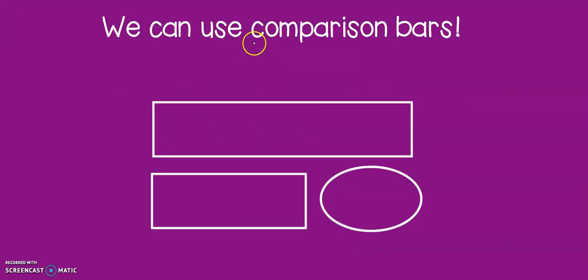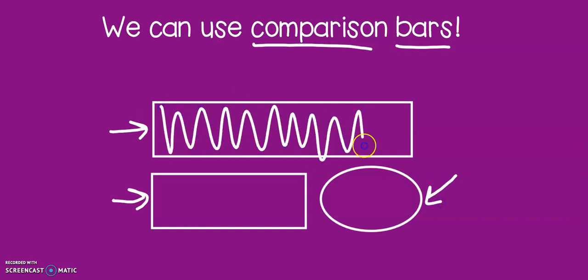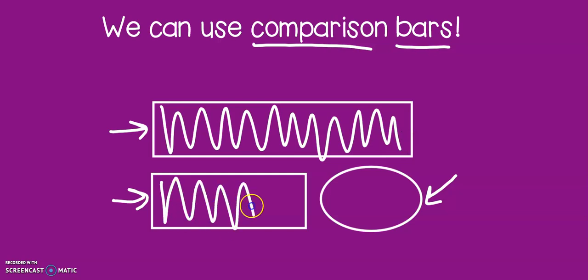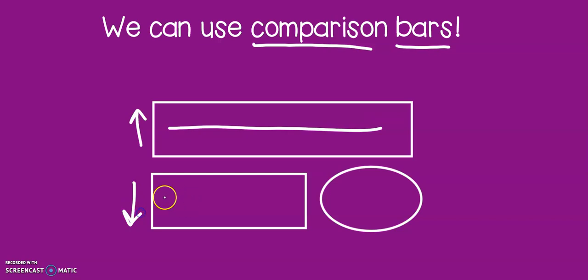These are what we call comparison bars. We have two rectangles and one circle. If you notice, the top rectangle is larger than the bottom rectangle — that is on purpose. We do that because the character or the person in the story who has more gets the bigger bar, and the character who has less gets the smaller bar.